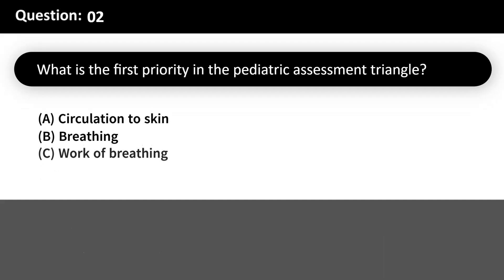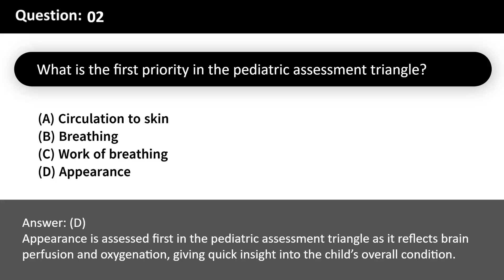What is the first priority in the pediatric assessment triangle? A. Circulation to skin. B. Breathing. C. Work of breathing. D. Appearance. Answer: D. Appearance is assessed first in the pediatric assessment triangle as it reflects brain perfusion and oxygenation, giving quick insight into the child's overall condition.